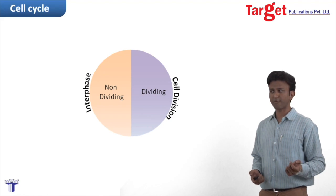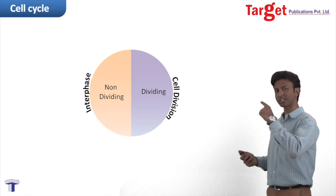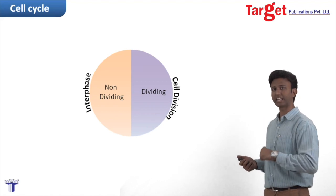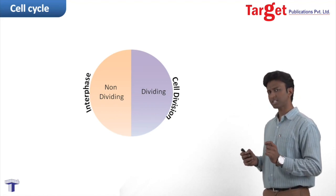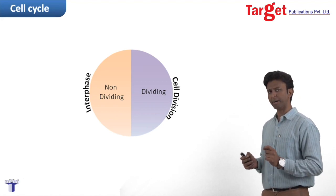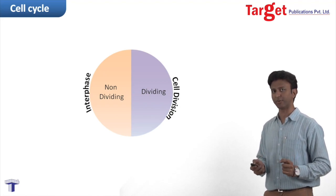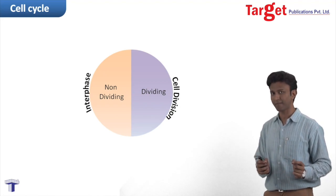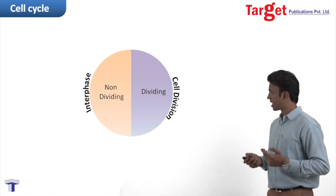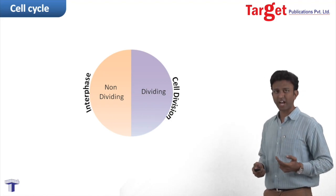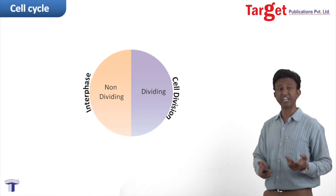As the cell does rounds through the cell cycle, it keeps repeating divisions. So the time spent between two divisions is what we mean by interphase. 'Inter' means between and 'phase' means stage. Let's go further and understand this interphase in detail.